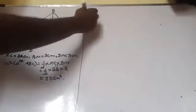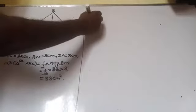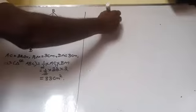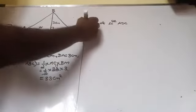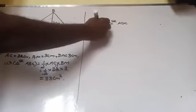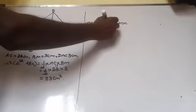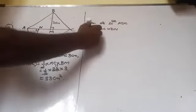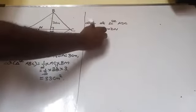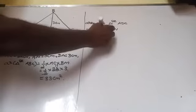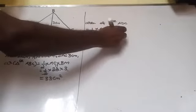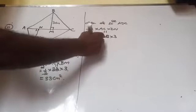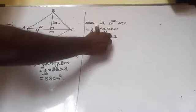Now find the area of triangle ADC. Area of triangle ADC is equal to half into base AC into height DN. That is half into 22 into 3, which gives 33 cm².